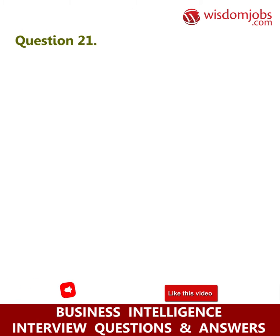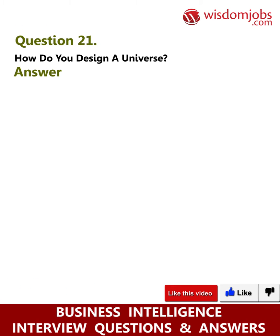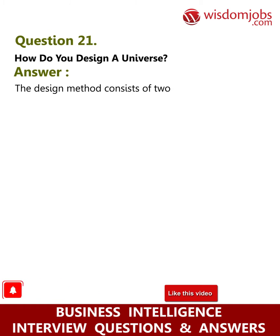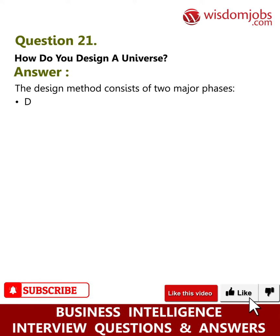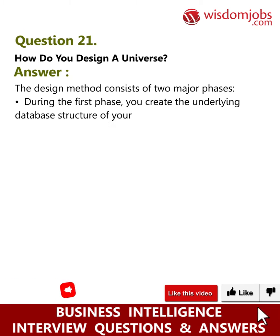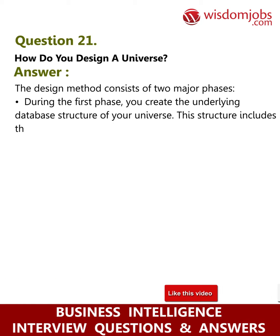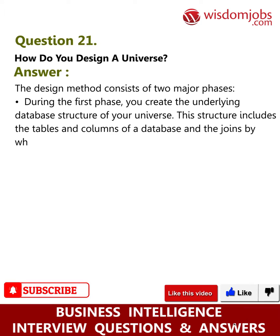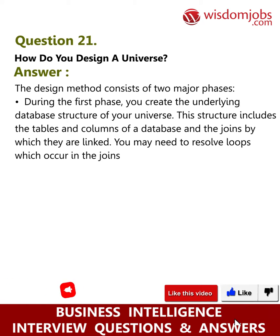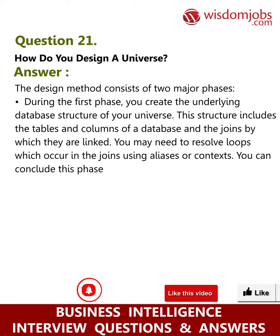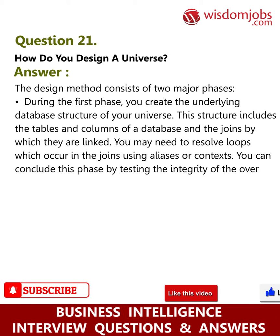Question 21: How do you design a universe? Answer: The design method consists of two major phases. During the first phase, you create the underlying database structure of your universe. This structure includes the tables and columns of a database and the joins by which they are linked. You may need to resolve loops which occur in the joins using aliases or contexts. You can conclude this phase by testing the integrity of the overall structure.